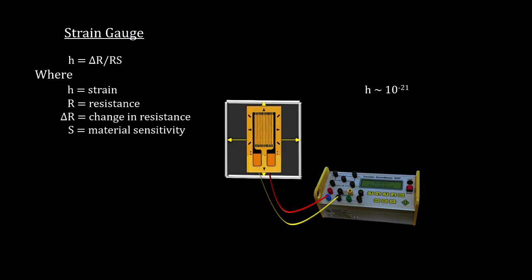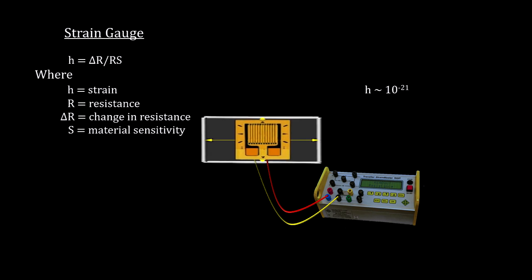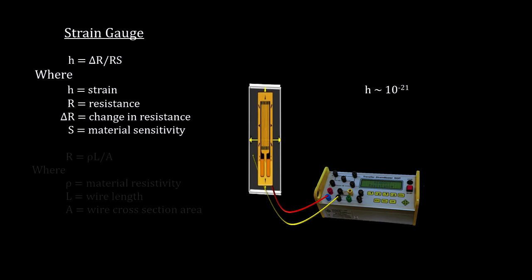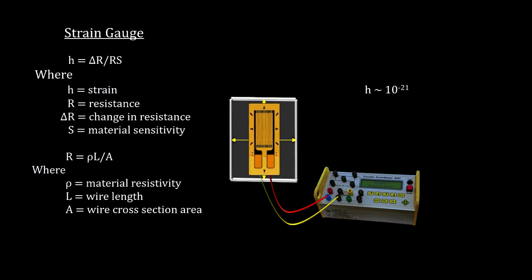If we attach wires along the plate instead of a meter stick, we can measure changes in the resistance of the wire as it is stretched and squeezed. A longer, thinner wire will provide more resistance to an electric current, and a shorter, fatter wire will provide less resistance to an electric current, thus giving us a measure of the strain.